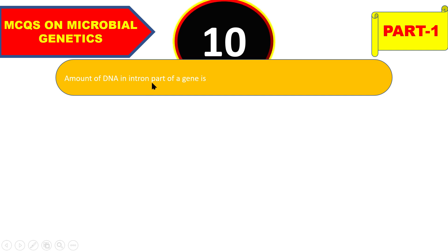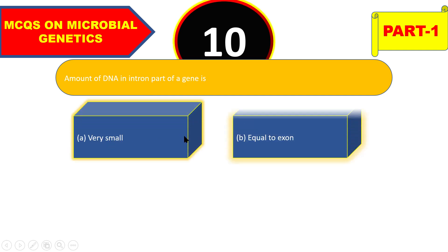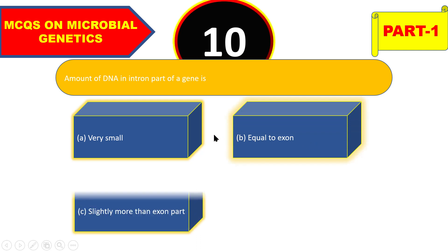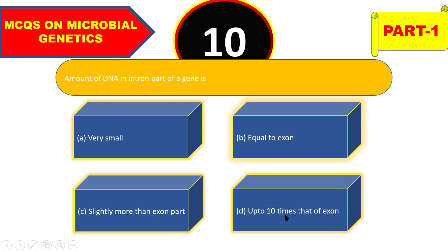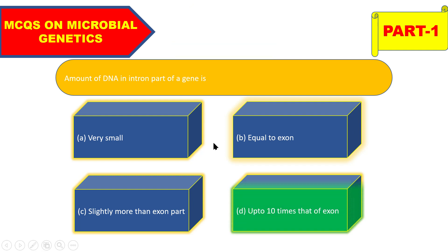Next question: the amount of DNA in the intron part of a gene is very small, equal to exon, slightly more than exon, or up to 10 times that of exon? The right answer is up to 10 times that of exon. So the intron has up to 10 times more base pairs than the exon.